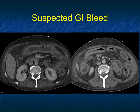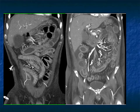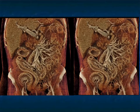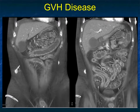What about this case? Suspected GI bleed with a thickened stomach and really extensive small bowel involvement with ascites. Again, look at the cross-sections of the bowel loops — that halo sign, inflammation in the mesentery, prominent vasculature and vasa recta, particularly nicely seen on cinematic rendering. This was another example of graft-versus-host disease.